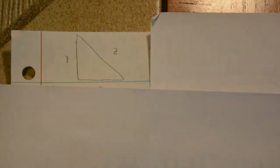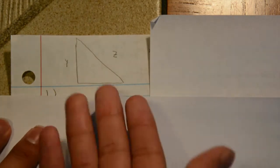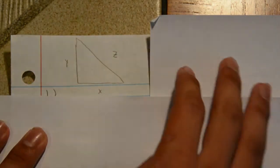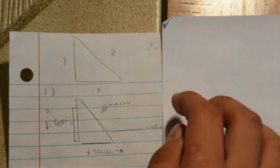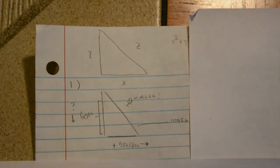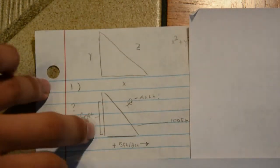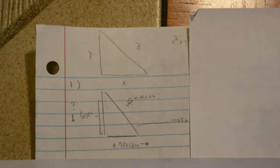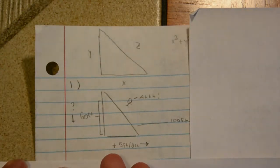In order to solve this problem, we're going to need to use our rules, and the first rule is that we should draw a picture to model the situation. Here we have a triangle resembling the ladder, the wall, and the ground, and we've labeled the sides x, y, and z. Now we can draw a more detailed picture to show all the rates and lengths that we know.